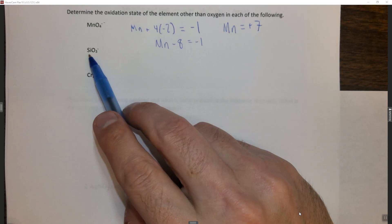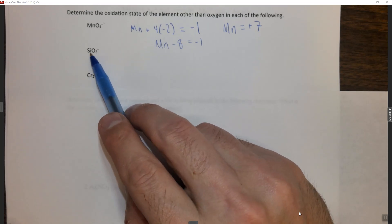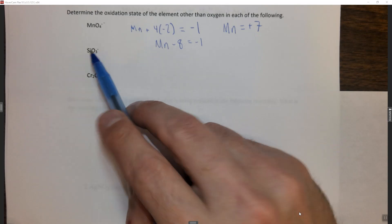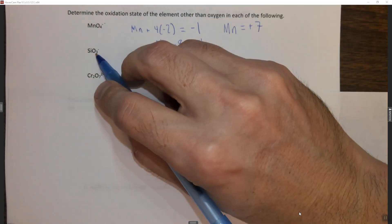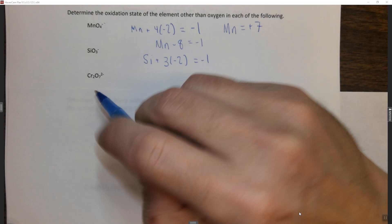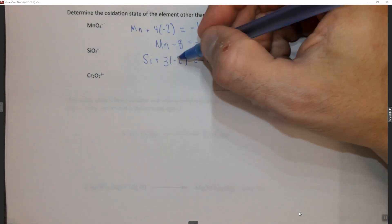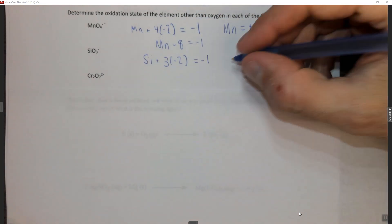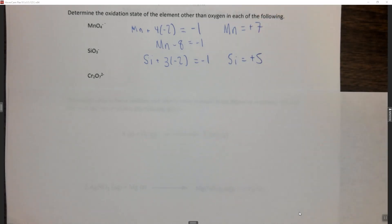Let's look here for a silicate. We have SiO3 minus. So Si, the thing we don't know, plus three times negative two—three oxygens, each with a minus two oxidation state—equals minus one, the overall charge. When you do this math you get Si minus six equals minus one and Si equals plus five when you do the algebra.